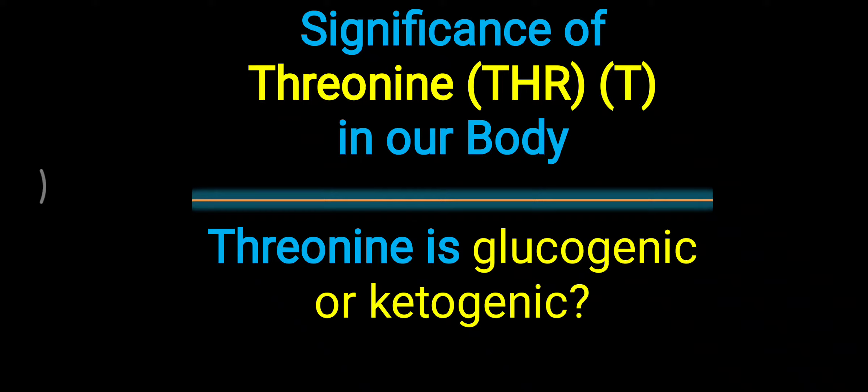Hello friends, today's topic is about the significance of threonine in our body. Threonine is one of the hydroxyl group-containing amino acids. Some important points and key aspects of threonine are discussed in this video, which are frequently asked in viva and exams.